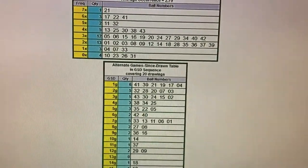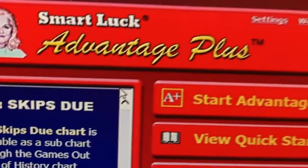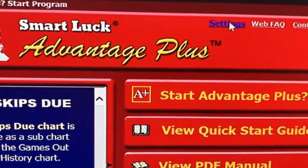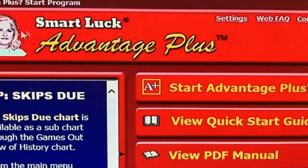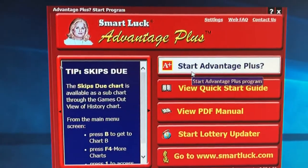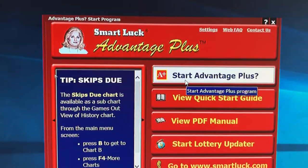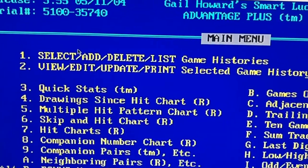The next thing, if you want, which I recommend, is buying a software called Advantage Plus. It's called Smart Luck Advantage Plus. If you get the software, click on start Advantage Plus, and then you're going to select one.